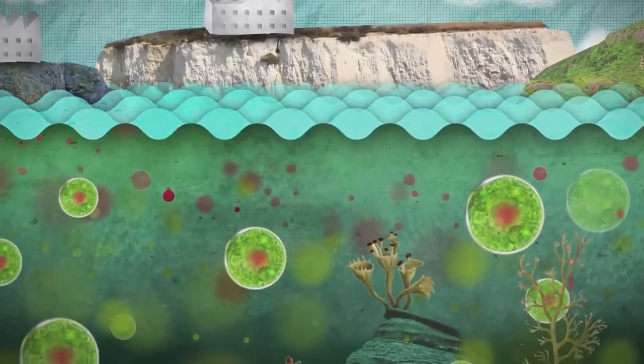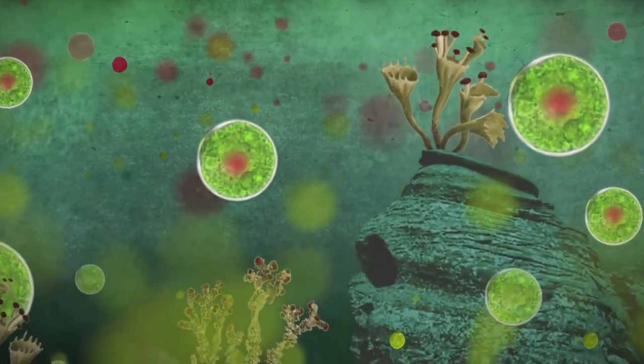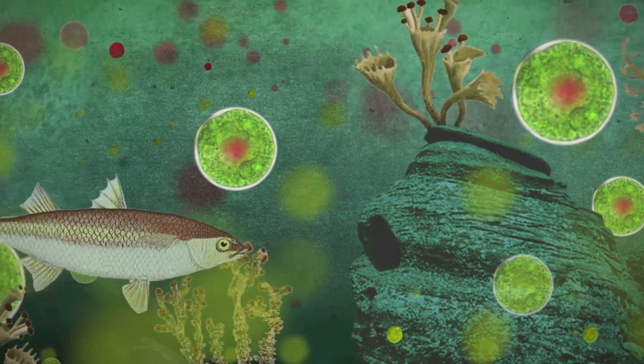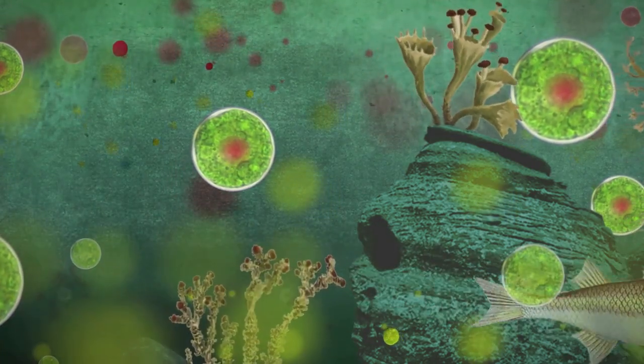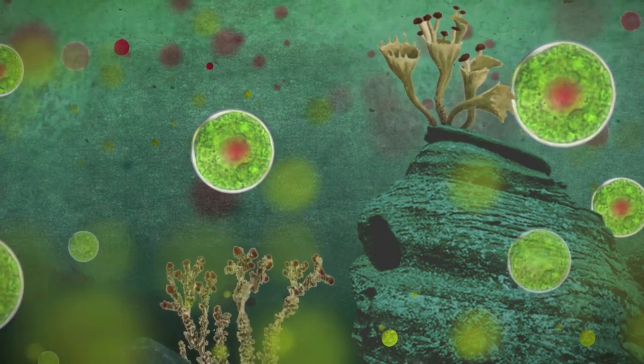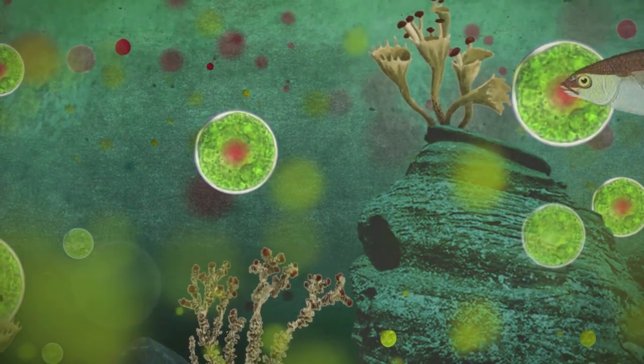In order to significantly influence the climate, huge areas would have to be fertilized, up to a quarter of the oceans. The impact of sowing artificial nutrients on such an industrial scale cannot be foreseen or quantified.